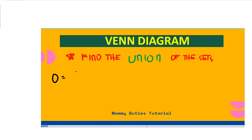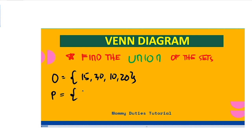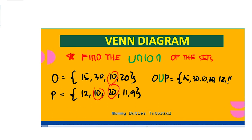For our next example, we have Set O with elements 15, 30, 10, and 20, and Set P composed of elements 12, 10, 20, 11, and 9. We find the common elements — 10 and 20. Therefore, O union P are the elements 15, 30, 10, 20, 12, 11, and 9. Repeated elements are written only once.